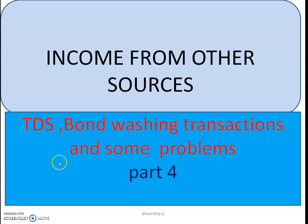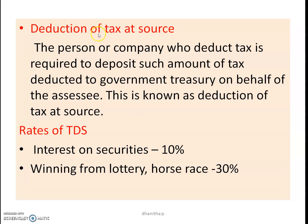Hi everyone. Let us discuss what is TDS — tax deducted at source — and bond washing transactions, and some illustrative problems from income from other sources. The person or company who deducts tax is required to deposit such amount of tax deducted to the government treasury on behalf of the assessee. This is known as deduction of tax at a source.